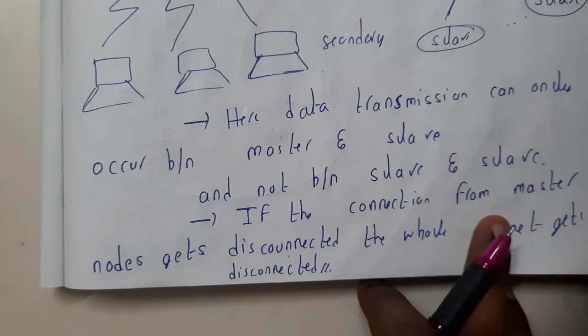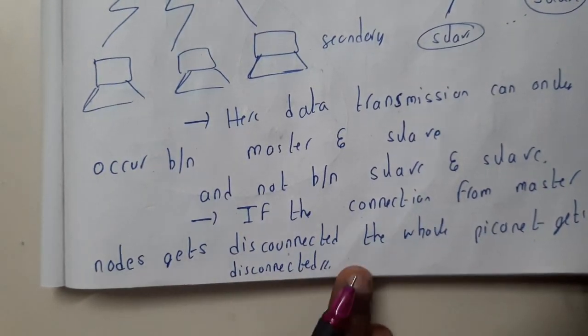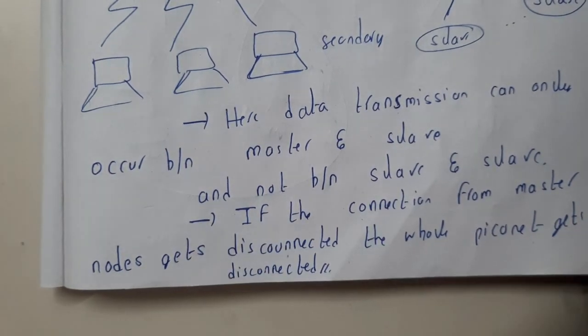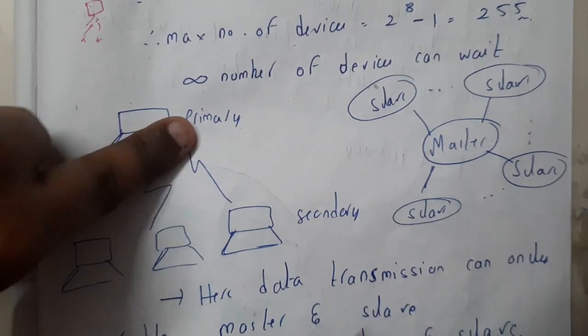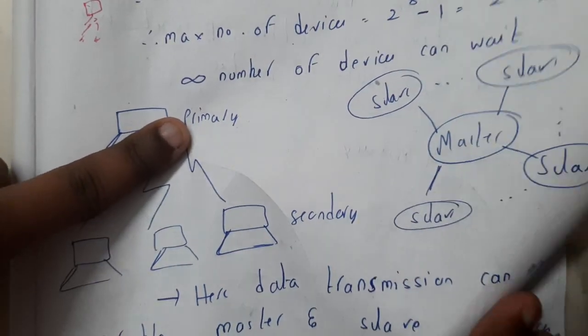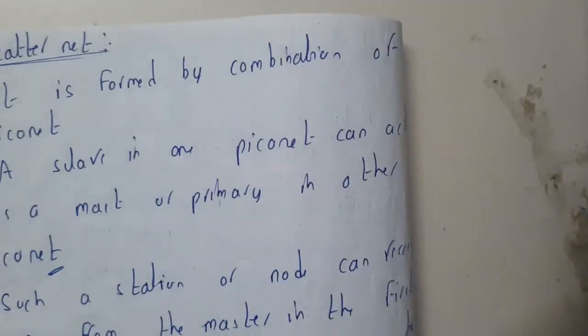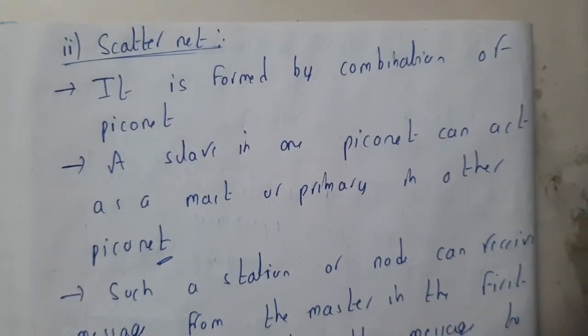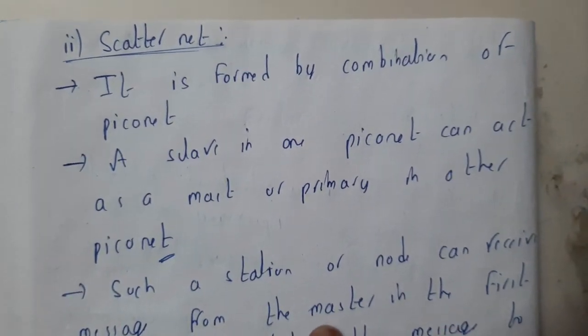If the connection of the master node gets disconnected, the whole piconet will collapse. If there is no master, there is no one to send the data — that is the reason why we say the whole network will collapse.